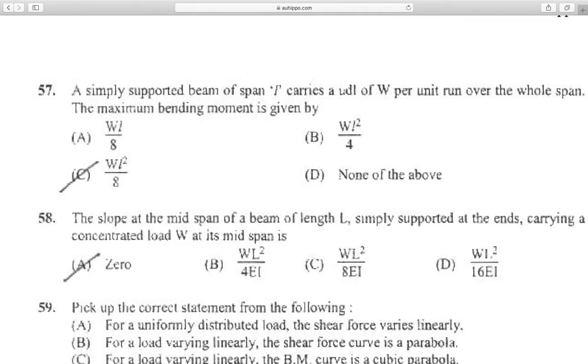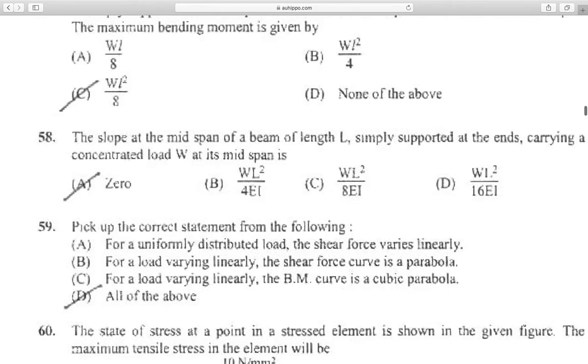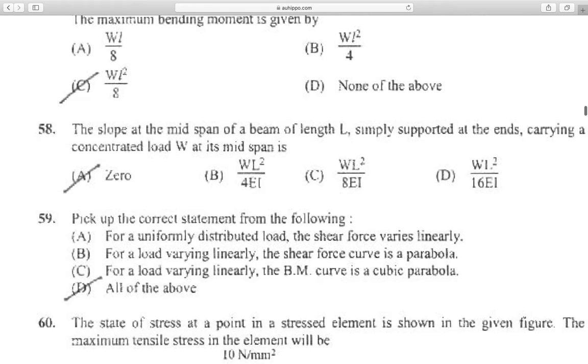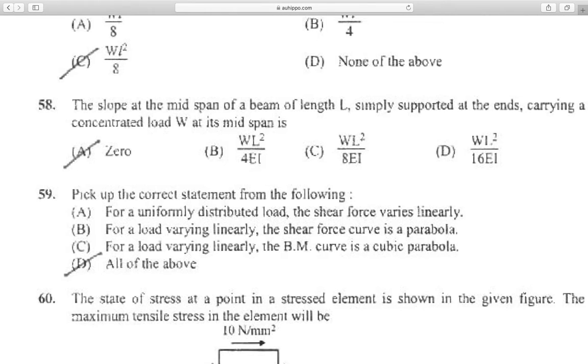Question 57: A simply supported beam of span L carries a UDL of W per unit run over the whole span. The maximum bending moment is WL squared by 8. Question 58: The slope at the mid-span of a beam of length L, simply supported at the ends carrying a concentrated load W at its mid-span, is zero.